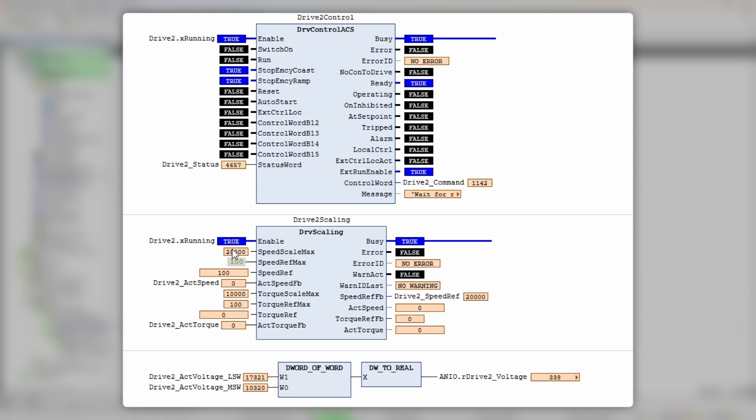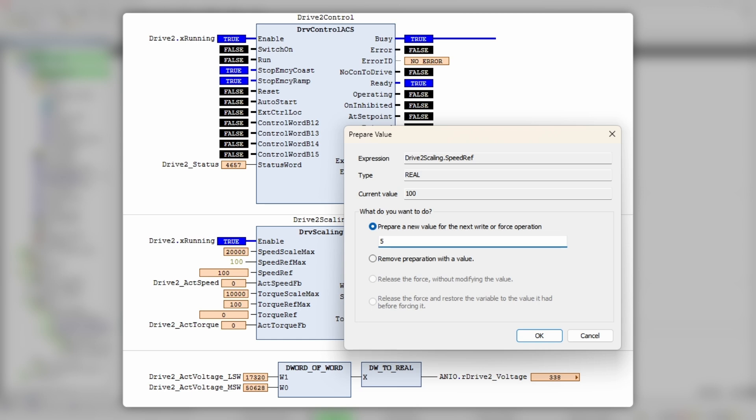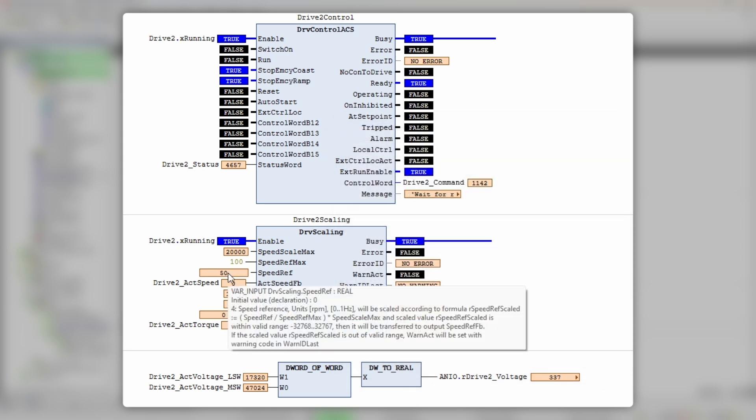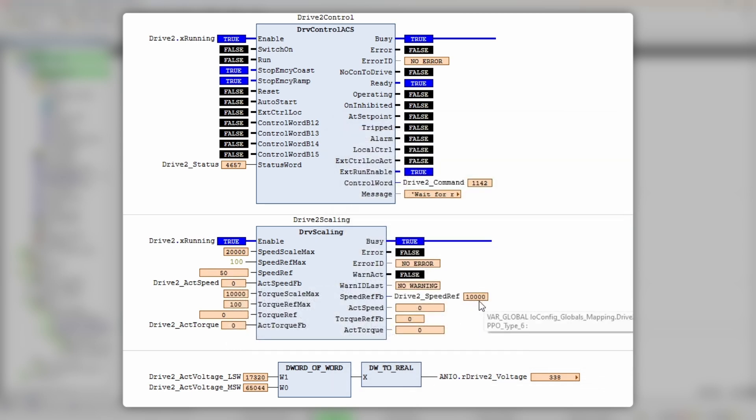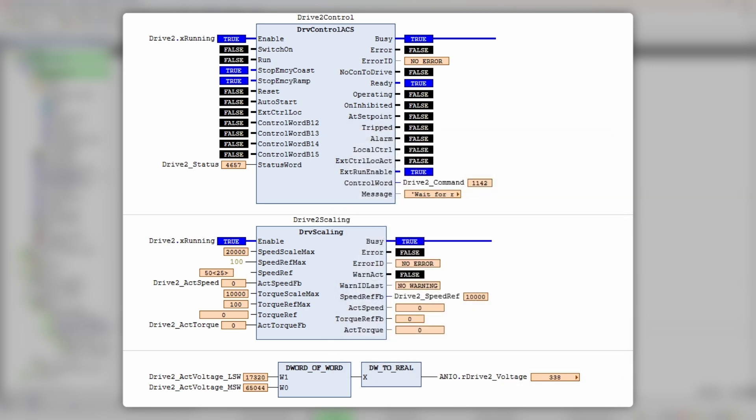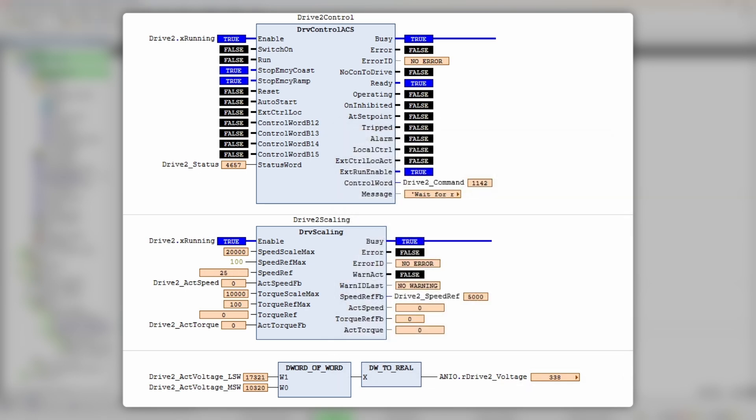Great, communication is already running, which makes both function blocks executing the inside logic. Drive is ready to operate and the message output gives us a hint of what is expected next. Now change speed reference to something like 50. As you can see, it is being scaled into value 10,000. Give 25 as a reference and you'll get 5,000 as a scaled value.